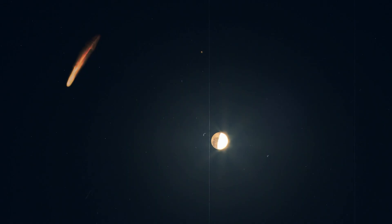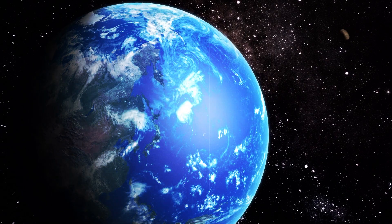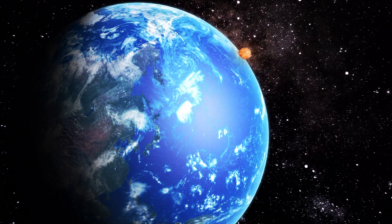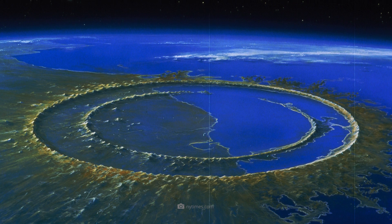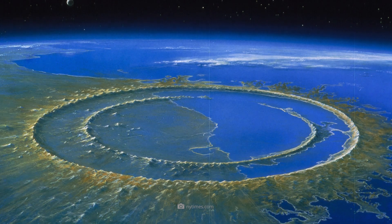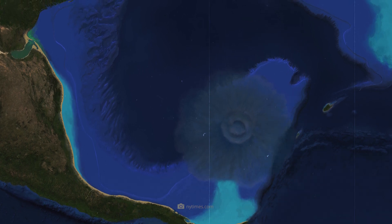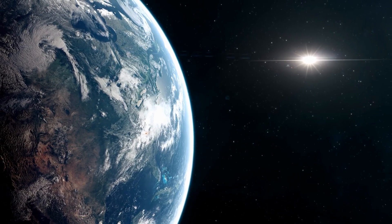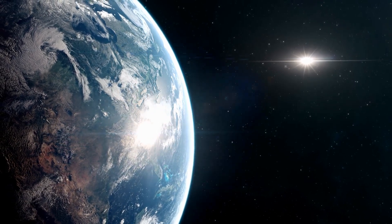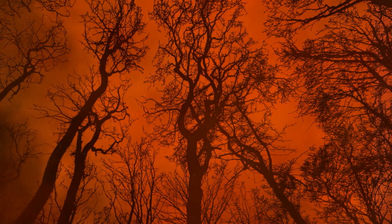Comet impacts on Earth are rare but devastating. The most famous impact in Earth's history occurred about 66 million years ago and is thought to have caused the extinction of the dinosaurs. The Chicxulub impact, which is visible today as an impact crater on the coast of the Yucatan Peninsula in Mexico, is interpreted by many scientists as a comet. The impact released an unimaginable amount of energy, triggered global fires, and led to a drastic drop in temperature, which wiped out much of life on Earth.